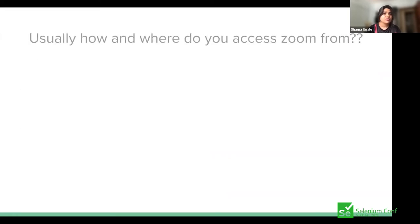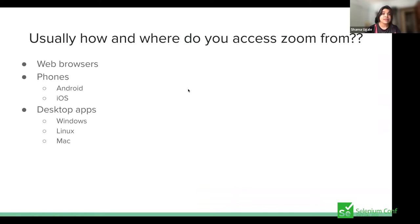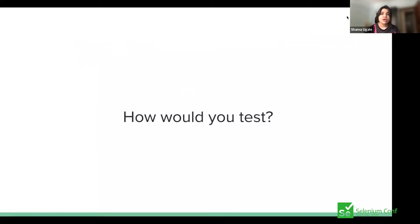Now let us see where these users are joining from. How do you access these kinds of apps? It can be your web browser, your phones — Android, iOS — or desktop apps as well. Some of you are using web, some desktop apps, and some might be joining through mobile. So how do you test these kinds of applications? You definitely want to cover the core part, which is having multiple users joining the same meeting and interacting — and making sure all users can join from different platforms and still collaborate seamlessly.